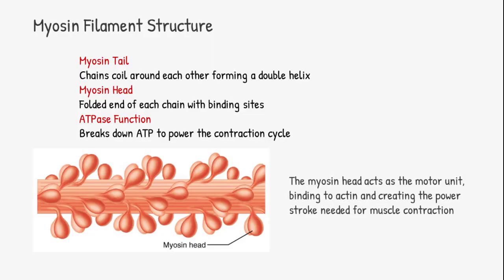This is where function meets form. Myosin, the thick filament, has heads that reach out and grab onto actin, forming what we call a cross-bridge. Each cross-bridge cycle uses ATP and shifts the filaments, pulling the Z lines closer. That's the basis of contraction.